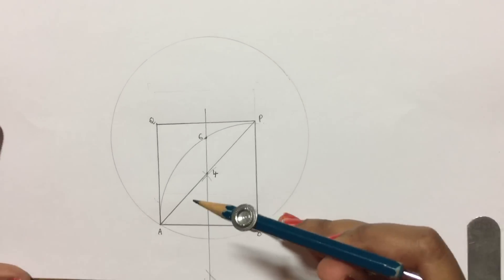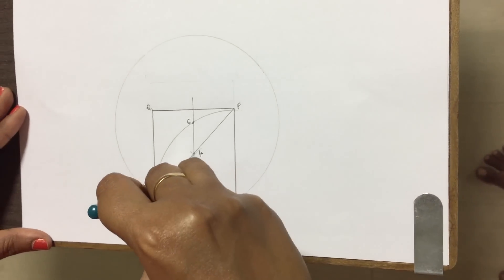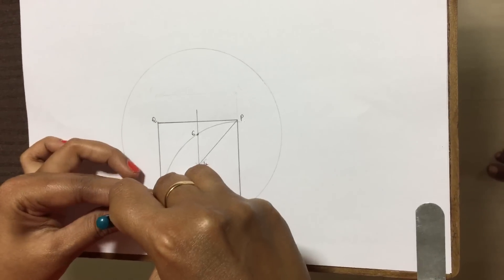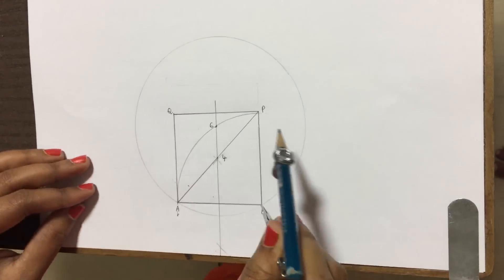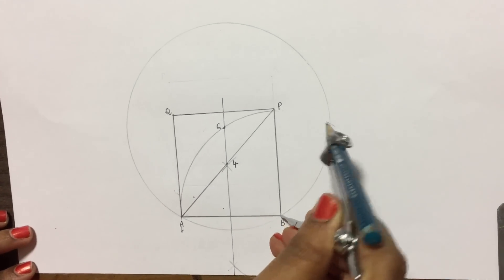After that measure A and B with the help of compass and cut the arcs onto the circle.